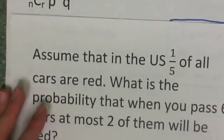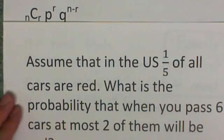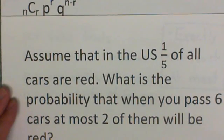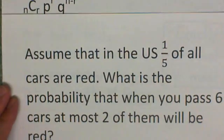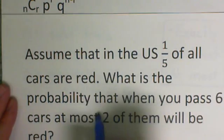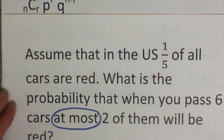Here's another possibility. Assume that in the US, one-fifth of all cars are red. What is the probability that when you pass six cars, at most two of them will be red? So now we have at most, so that means that's the maximum, and we'd actually want to go down from there.